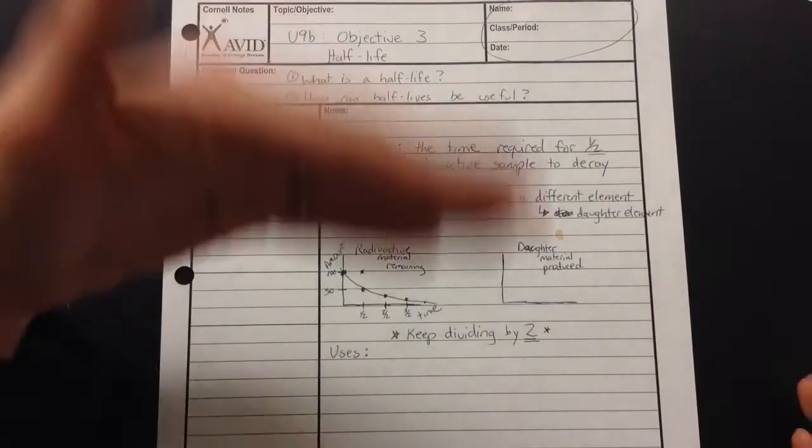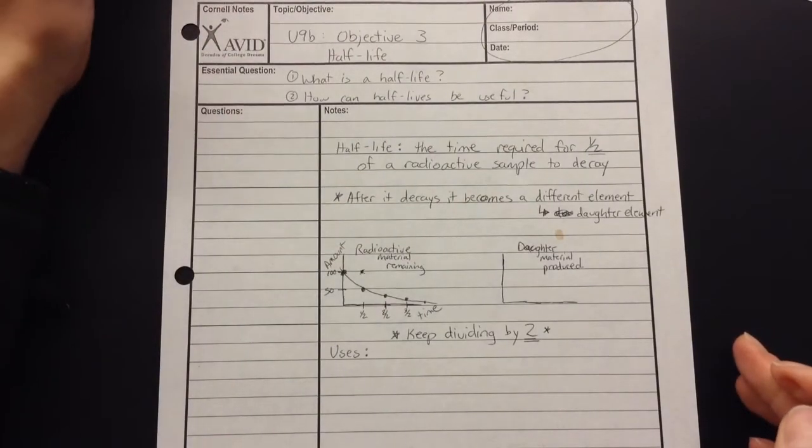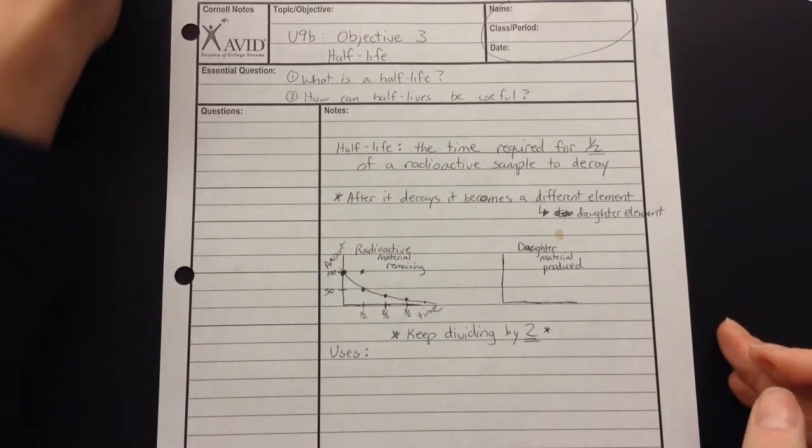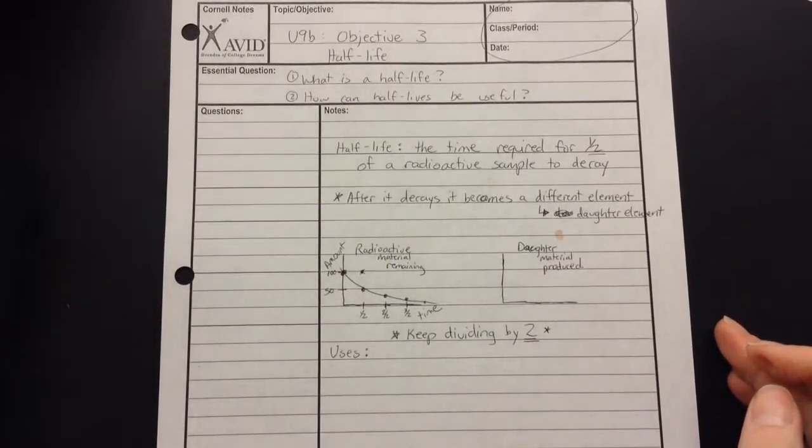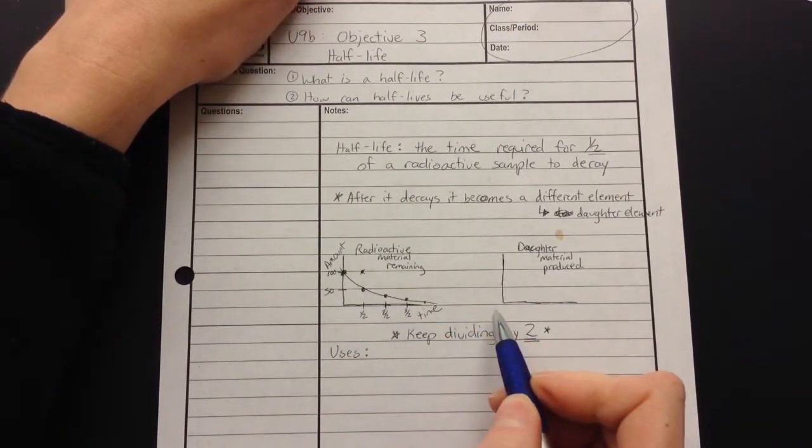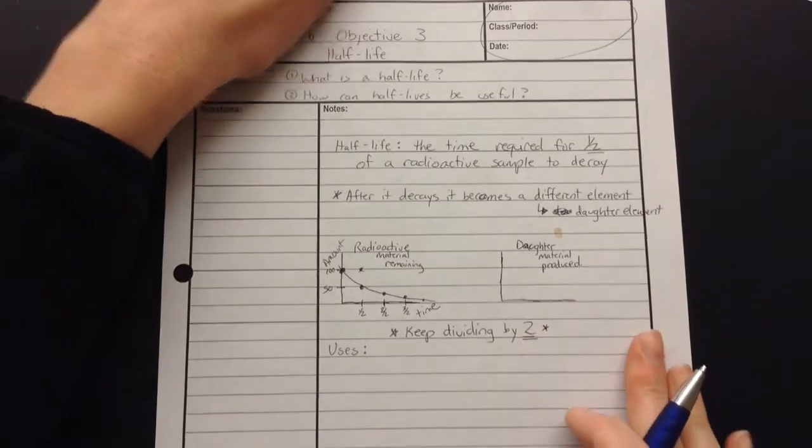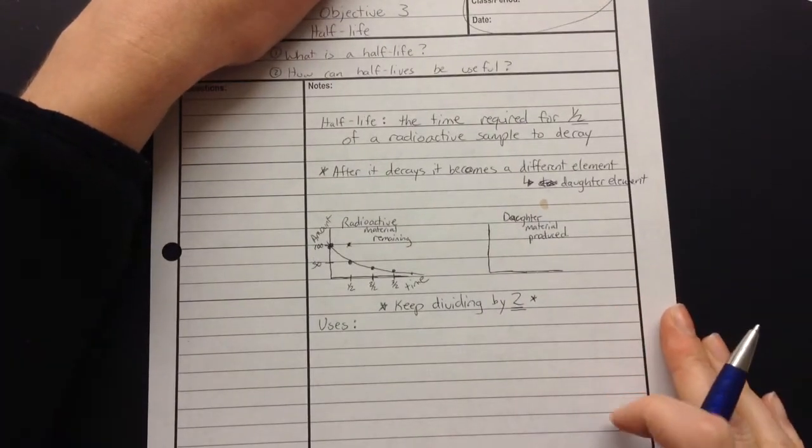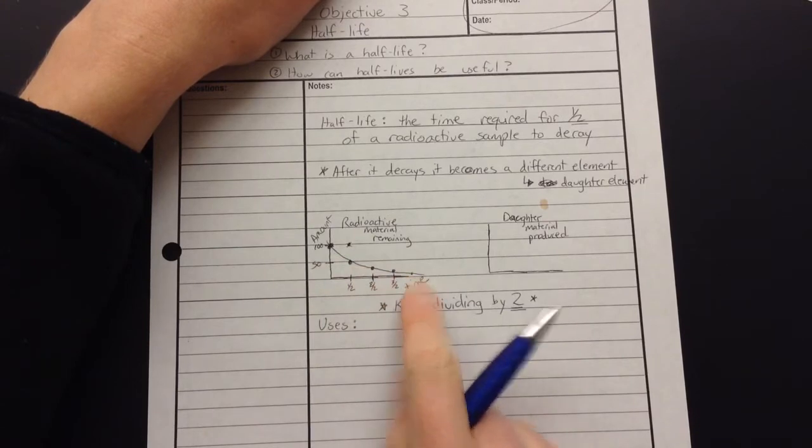Now, the interesting thing is that if you keep dividing by two, eventually you get to one, and then you have to divide by half, and then it's just that one either decays or it doesn't. But the interesting thing is that it never really gets to zero, so we never really run out of our radioactive material. It's always there. It just gets a lot less as time goes by.